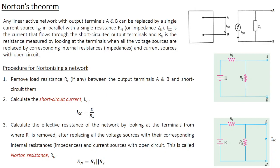Last class we discussed Thevenin's theorem, wherein a given network is reduced into an equivalent circuit consisting of a single voltage source with a series resistance. Today we are going to learn another network reduction method known as Norton's theorem.